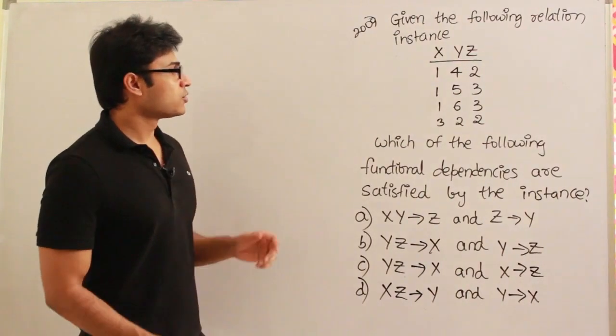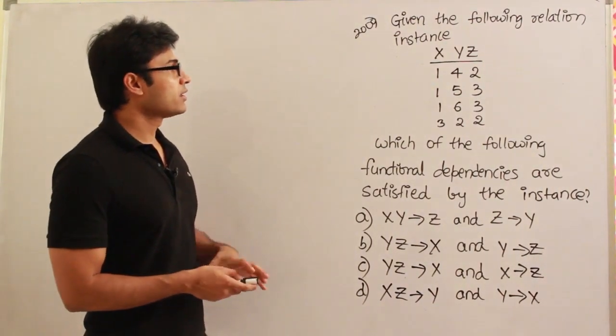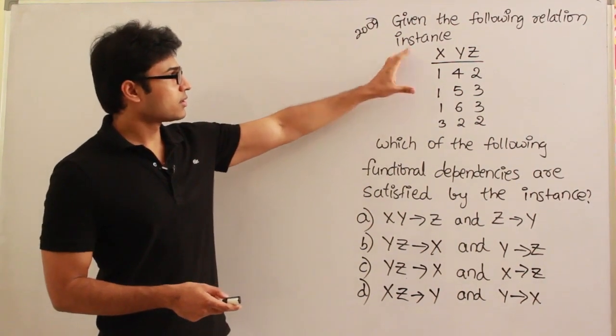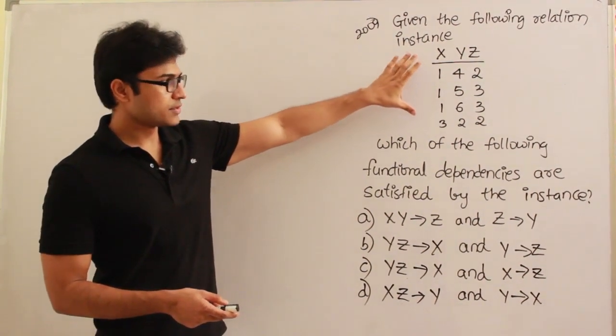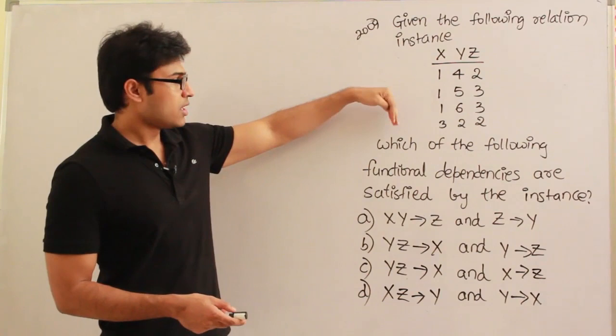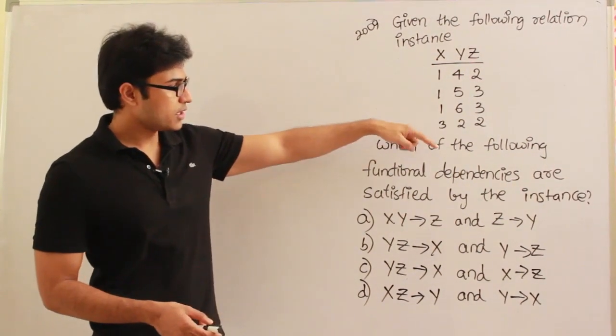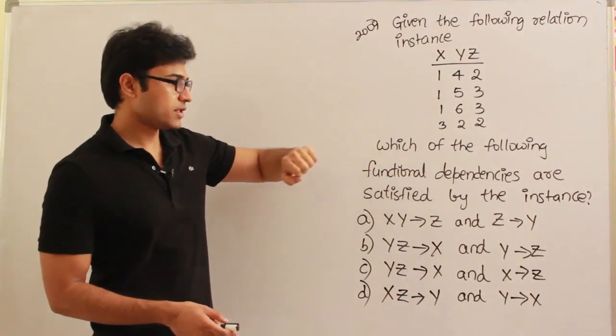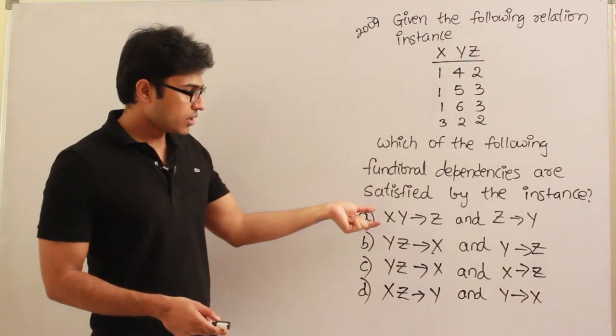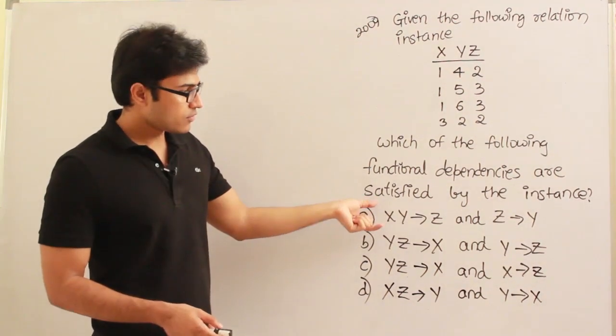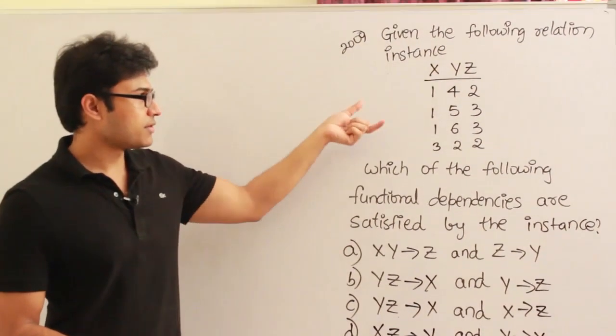Now watch this question, this is given in Gate 2000. They are saying that this instance is given - given the following relation instance, which means this one is given. Which of the following functional dependencies are satisfied by the instance? Which means they want us to observe each one whether they are satisfied there or not.